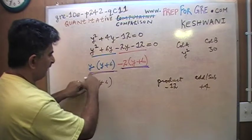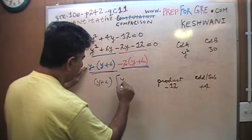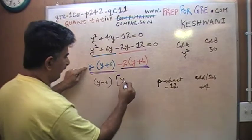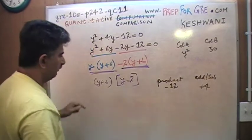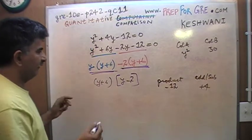If I take out y plus 6 from here, I am left with y. And here if I take out y plus 6 common, I am left with negative 2. So there you go.